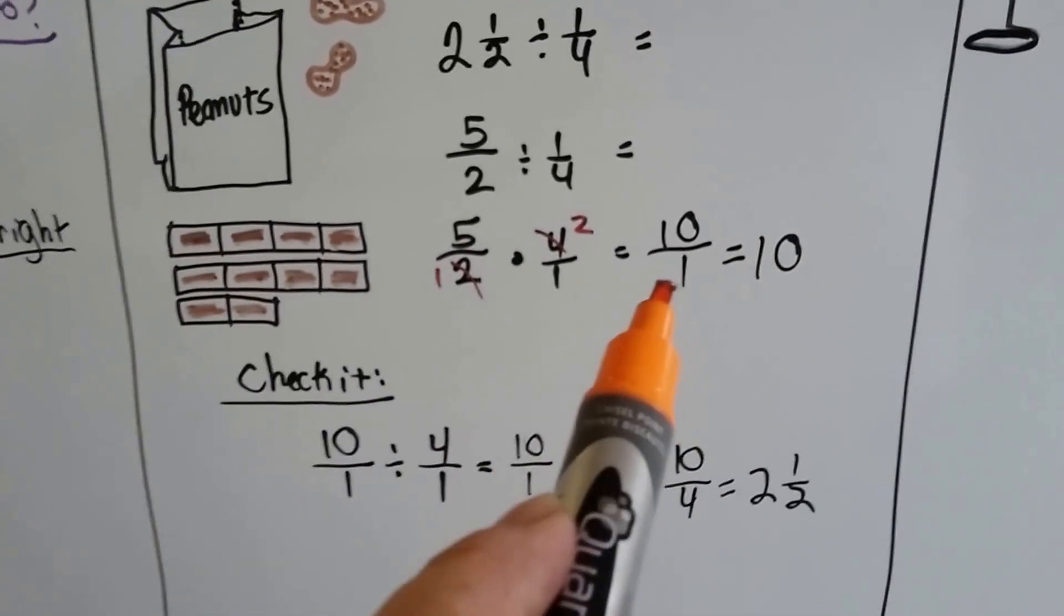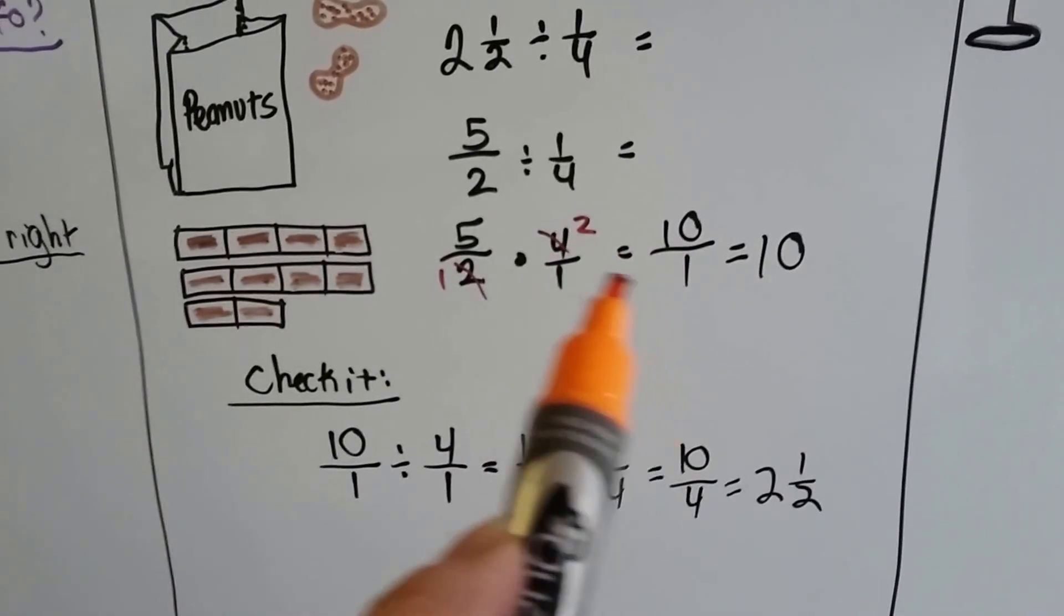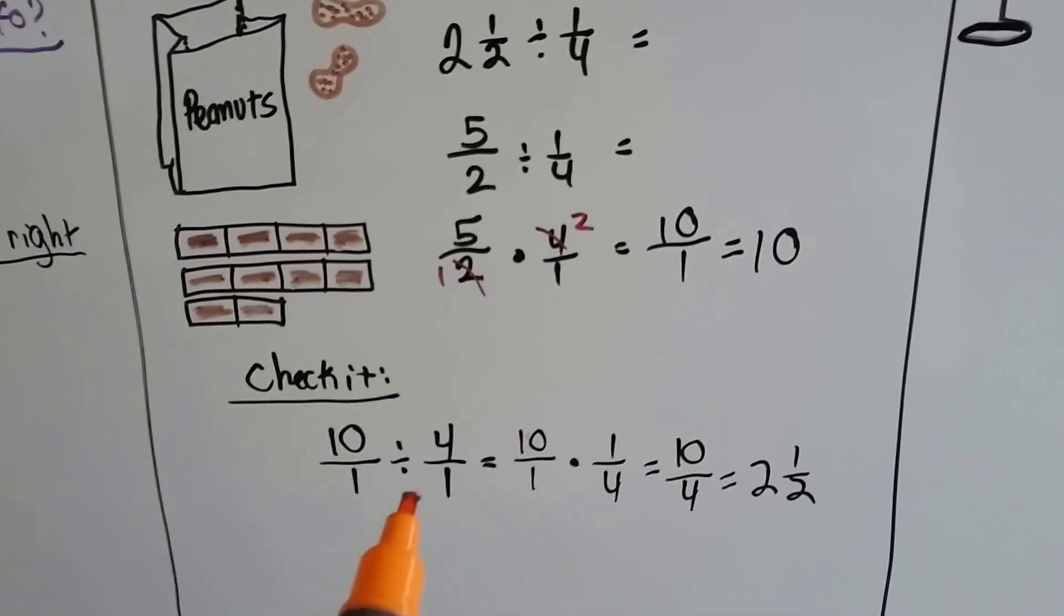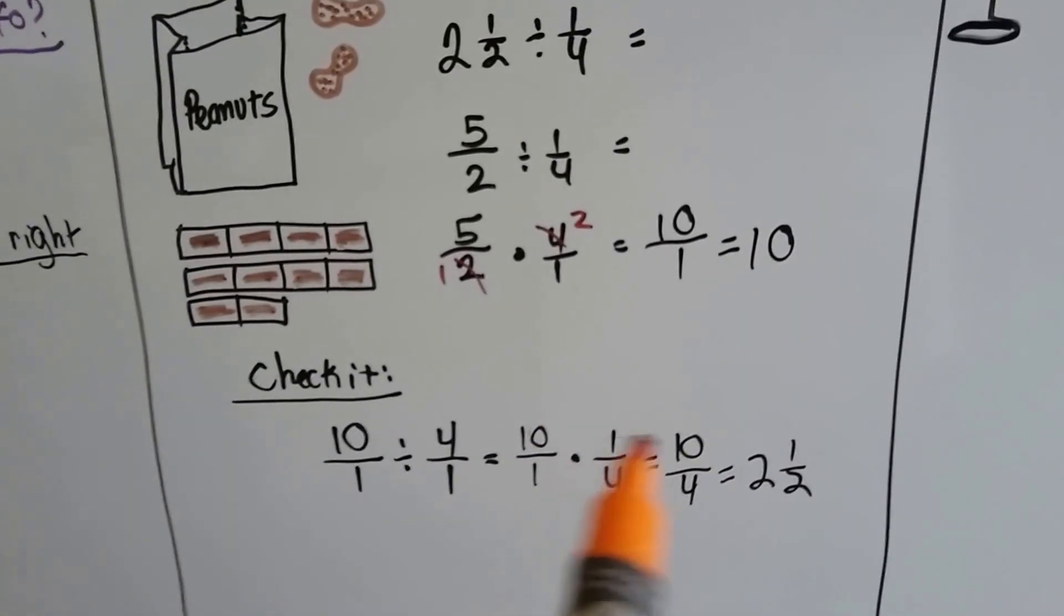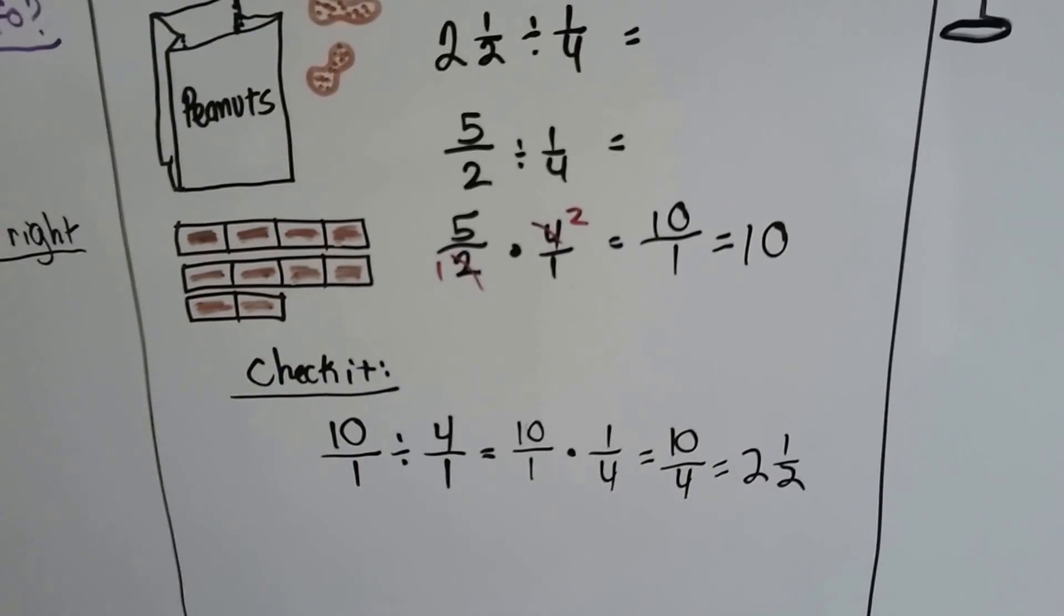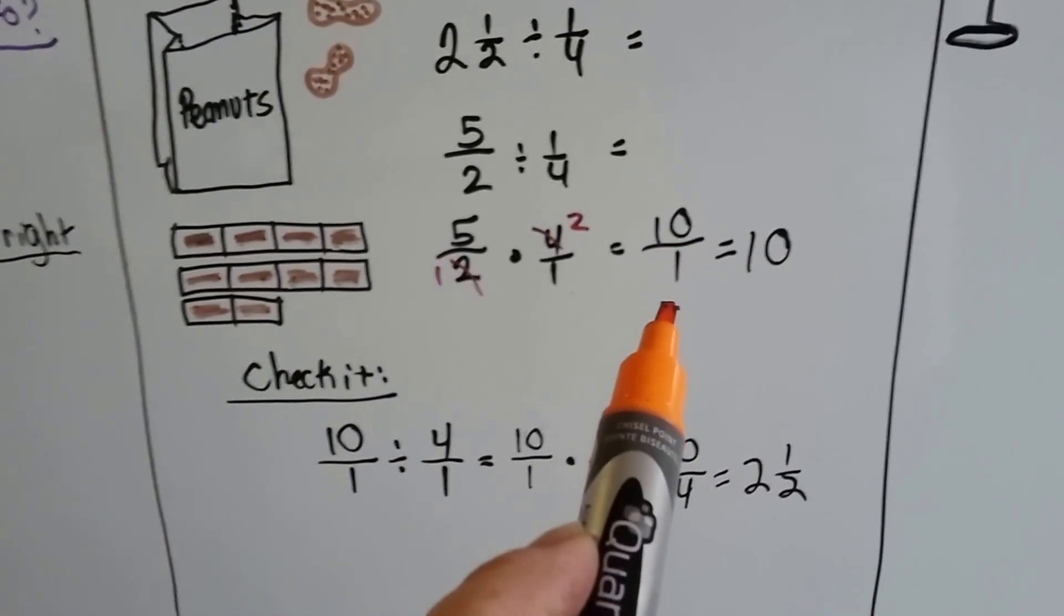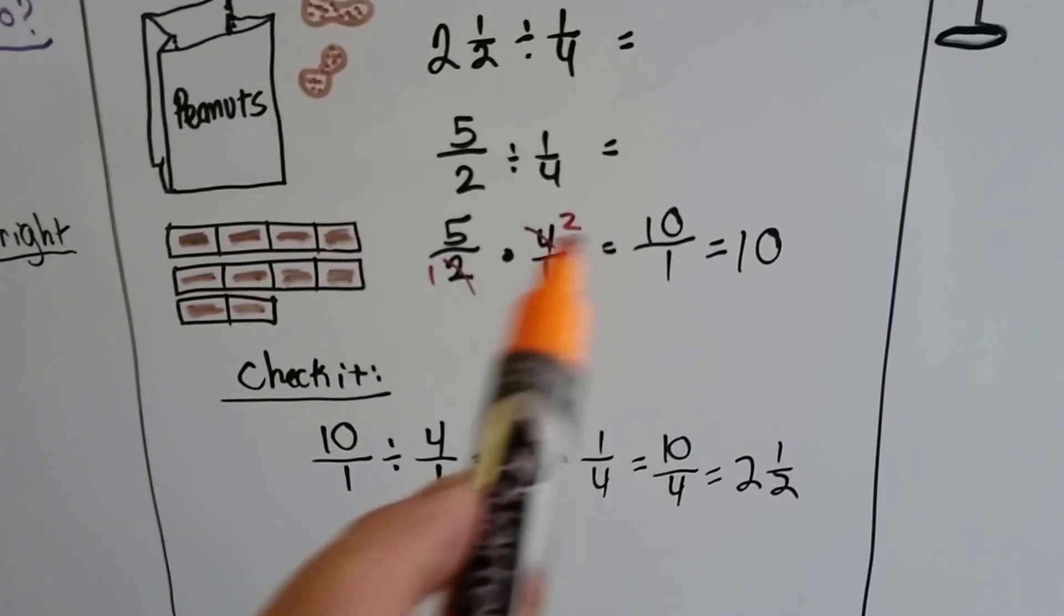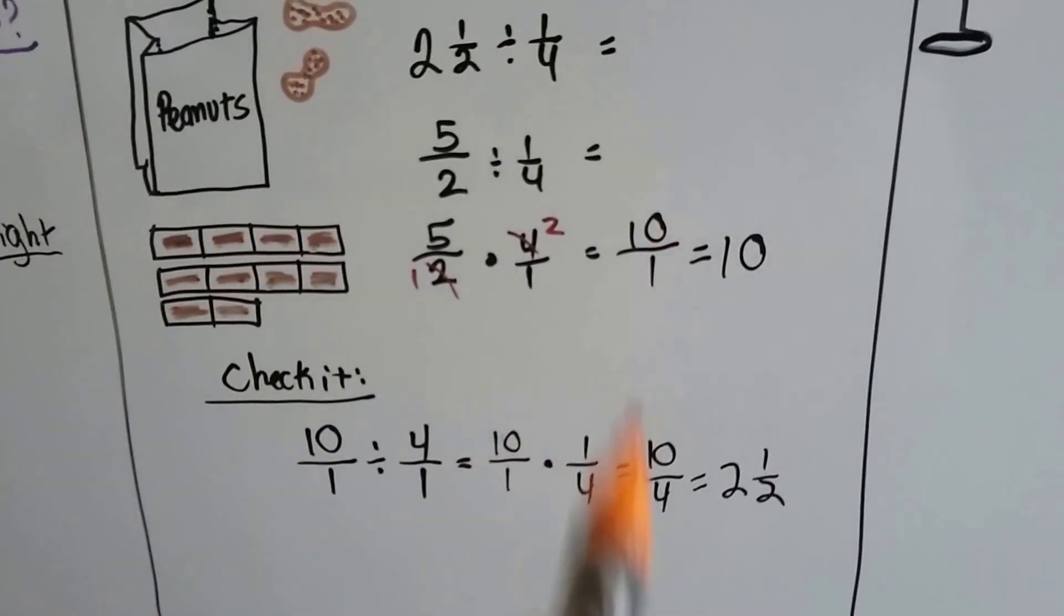To check it, we multiply the ten over one, we divide the ten over one by the four over one, which means we multiply the ten over one by its reciprocal one fourth, and we get ten over four, which is two and a half. See? That's how we did it backwards. I just kept it as ten over one and four over one because it made it easier. I would have had to do that anyway.